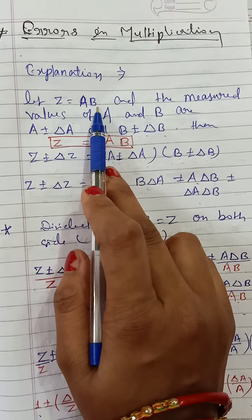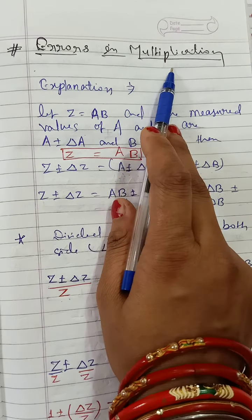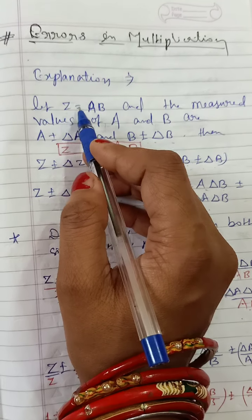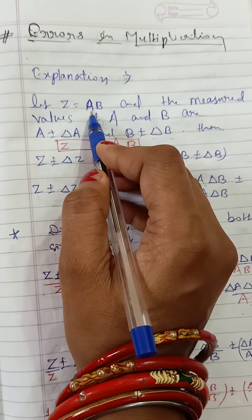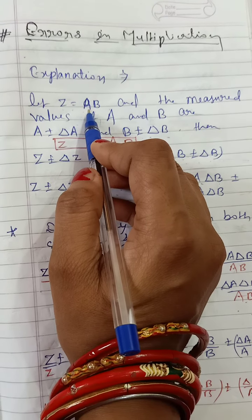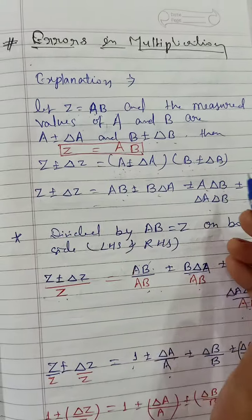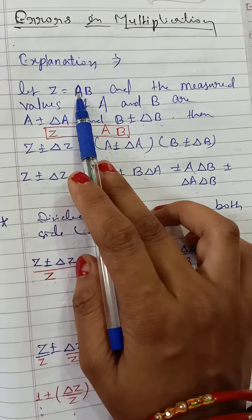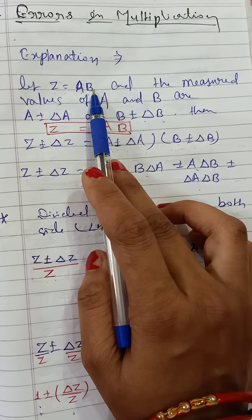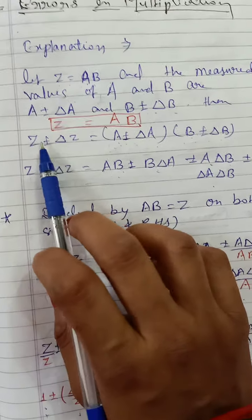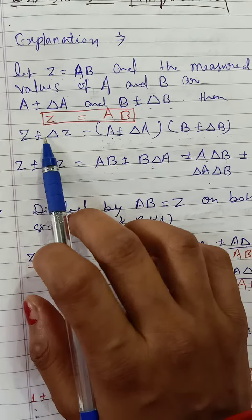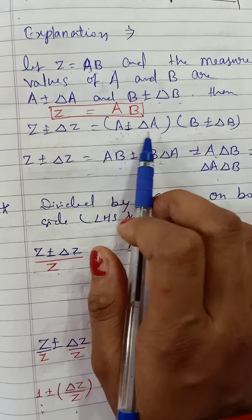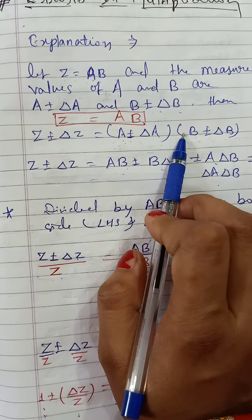Suppose z is equal to a times b. We will now discuss error in multiplication. So we take z equal to a·b, where a is equal to a plus minus delta-a and b is equal to b plus minus delta-b. Now we will put the values of a and b into this formula, giving z plus minus delta-z equal to (a plus minus delta-a)(b plus minus delta-b).